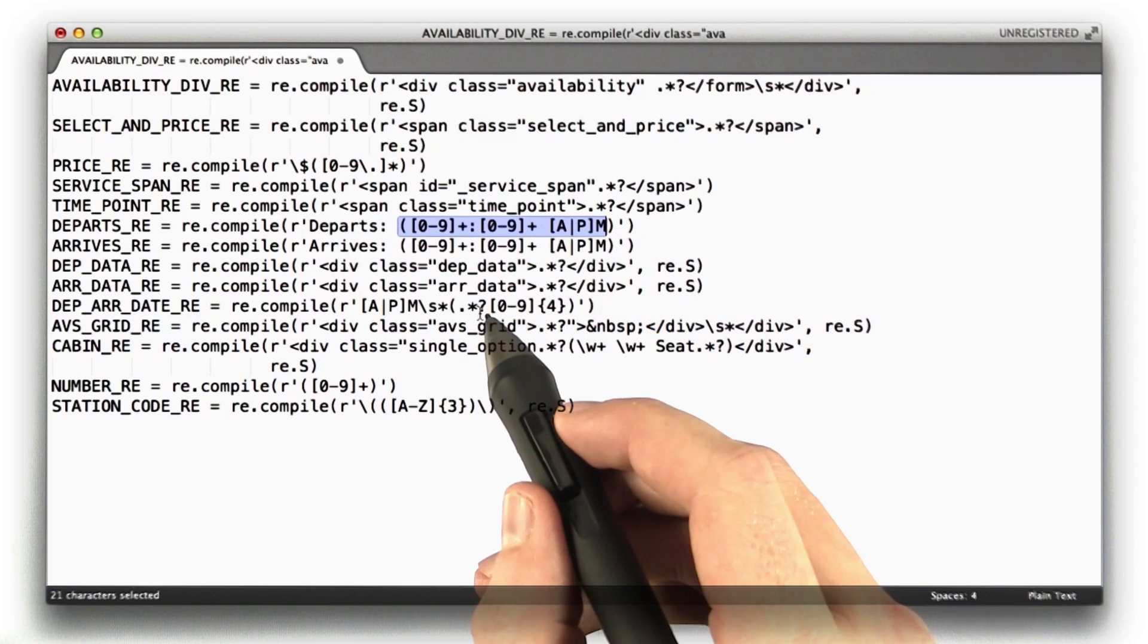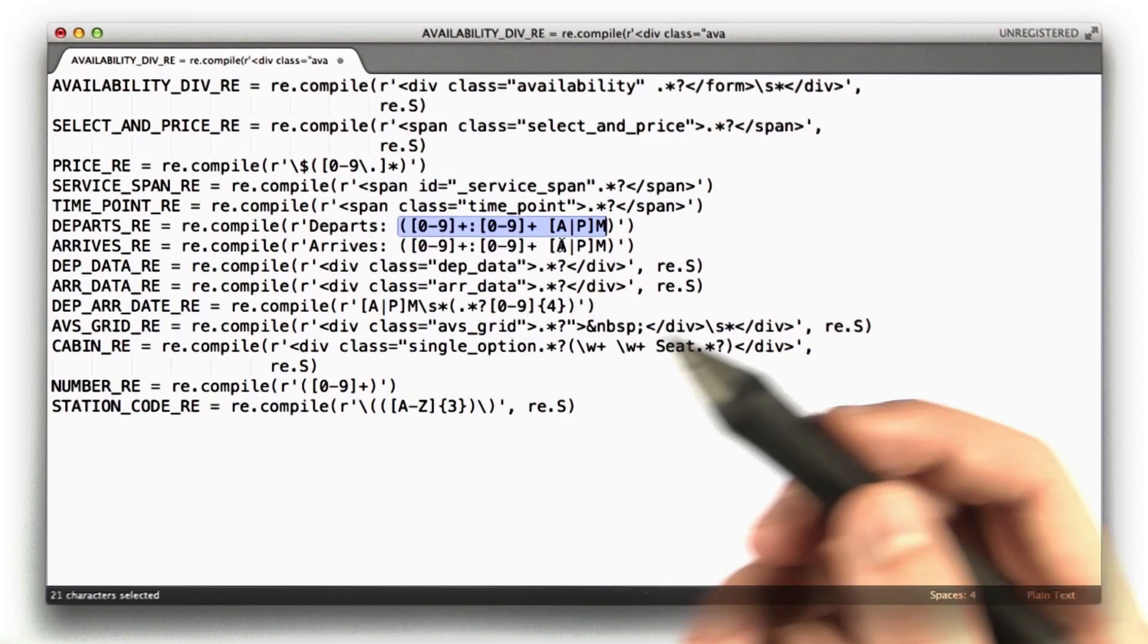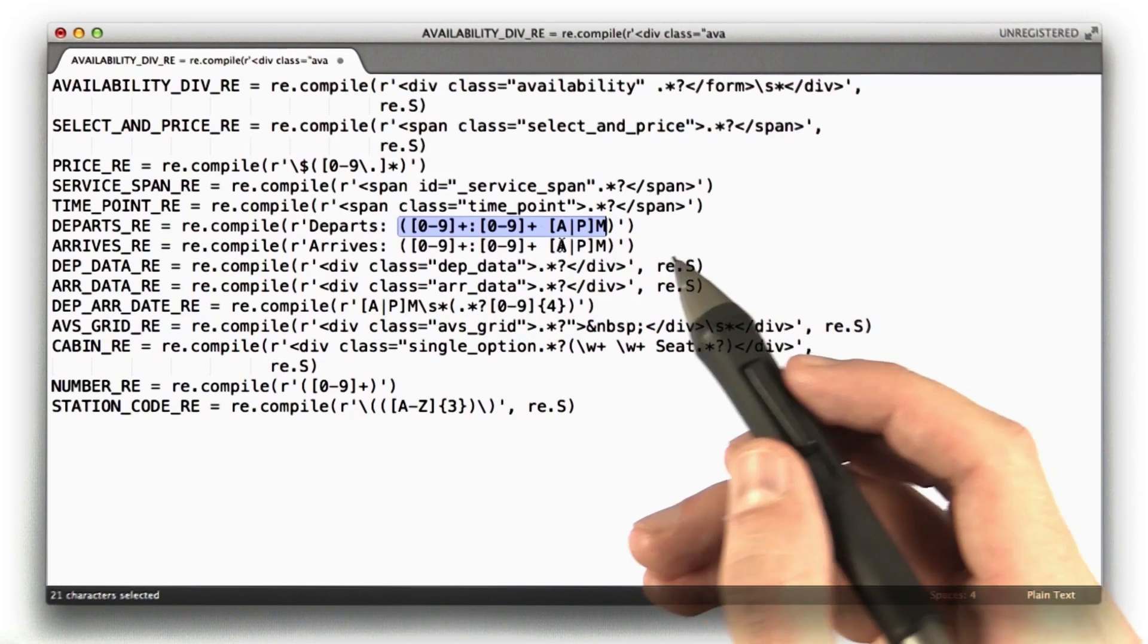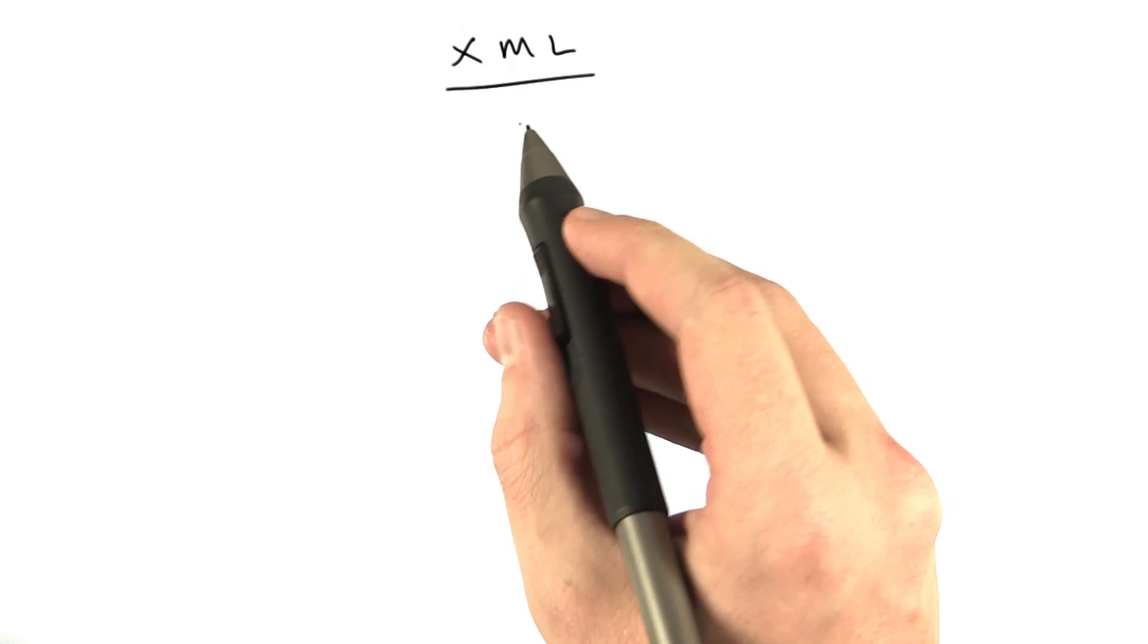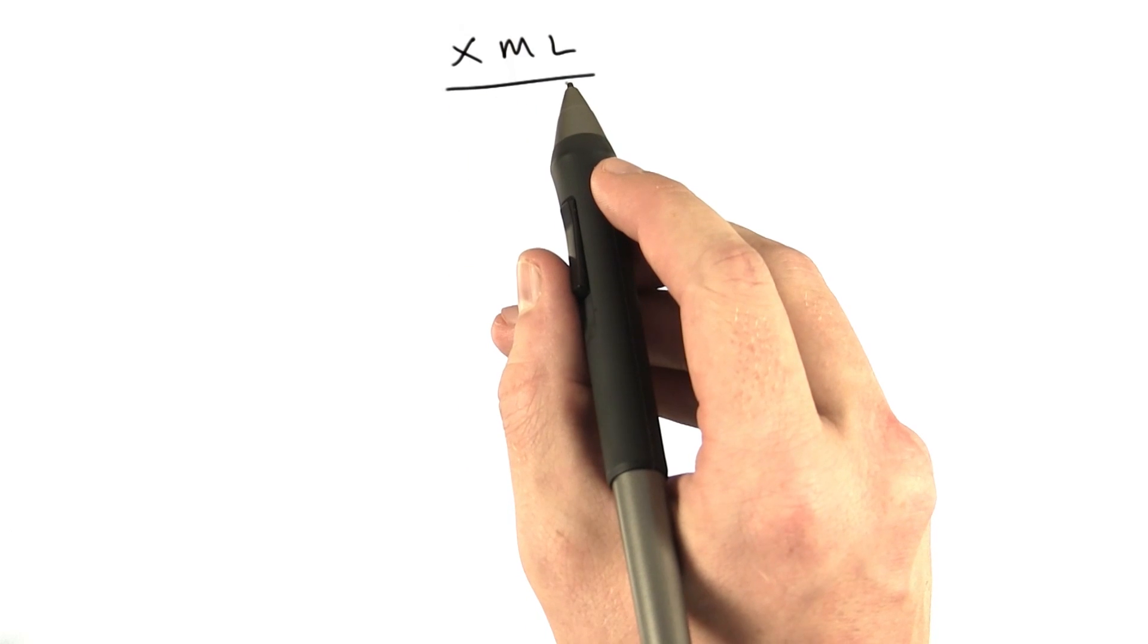In a perfect world, we wouldn't have to hit Amtrak's web page. We would instead use an API that speaks a language more appropriate for this task. And such a language, if language is the correct word, might be XML.